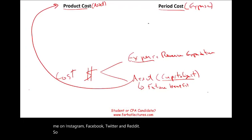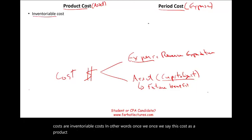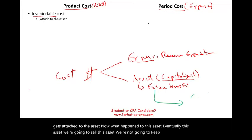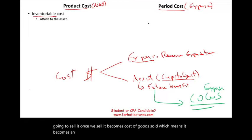Product costs are inventoriable costs. Once we say a cost is a product cost, it means it's part of your inventory — it's an asset. Eventually, we're going to sell this asset, at which point it becomes cost of goods sold, which means it becomes an expense. So all assets eventually get expensed, but in due time.